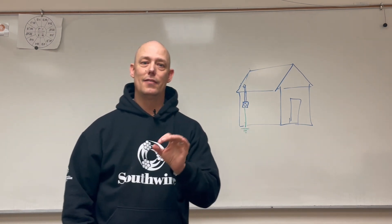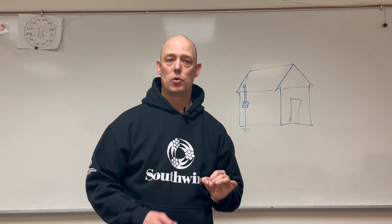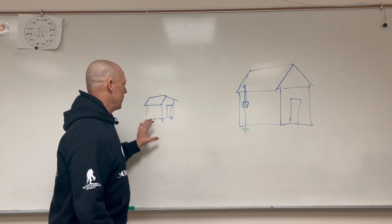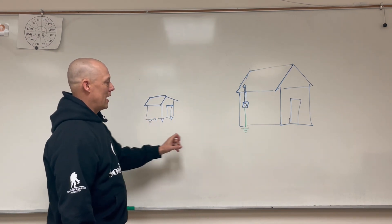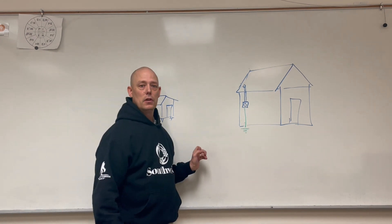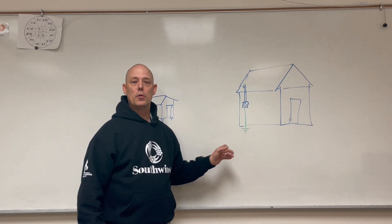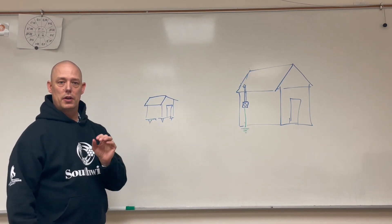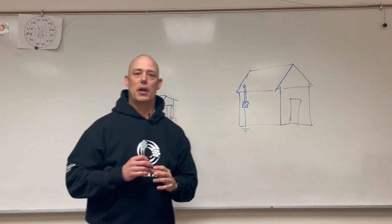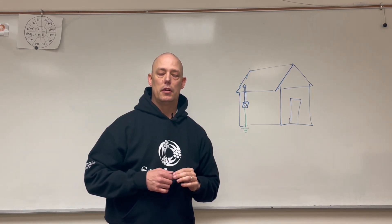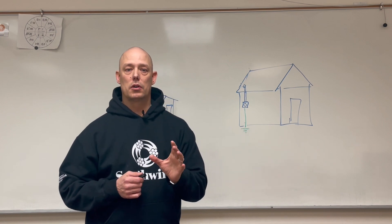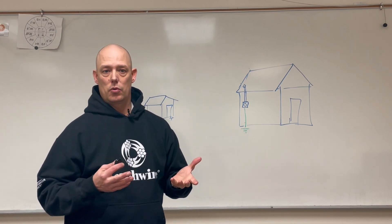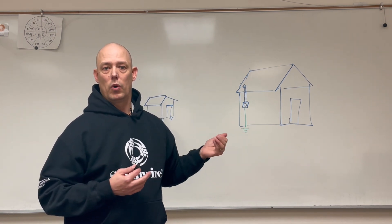You have to go to 225.30. And 225.30 tells us that if we have an accessory building, we can have one feeder or one branch circuit that goes there — we can't have multiple. But it does say at the bottom of that code that a multi-wire branch circuit can be considered one circuit.